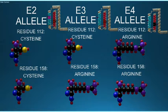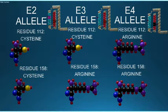These alleles vary in the amino acids that exist at residue 112 and 158, with E2 having cysteines at both of those residues, E4 possessing arginines at both of those residues, and E3 having cysteine at residue 112 and arginine at residue 158.